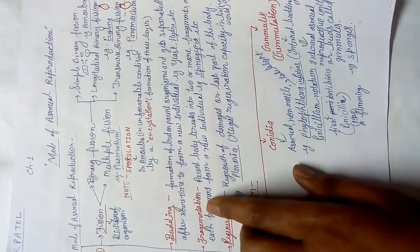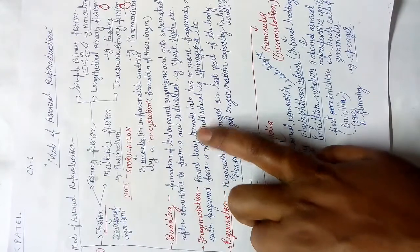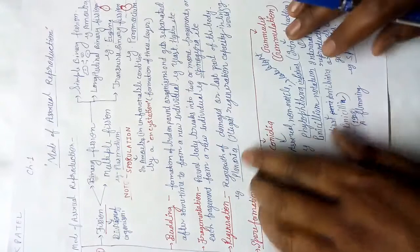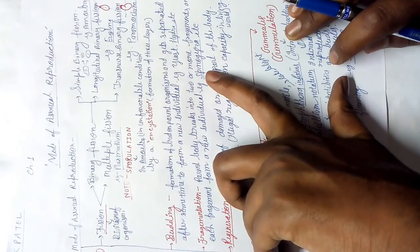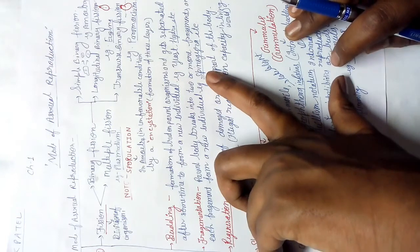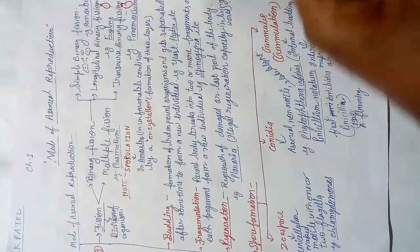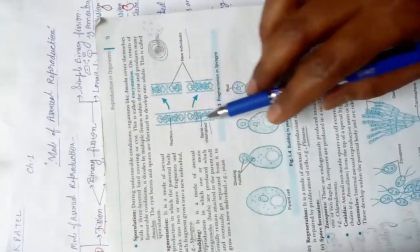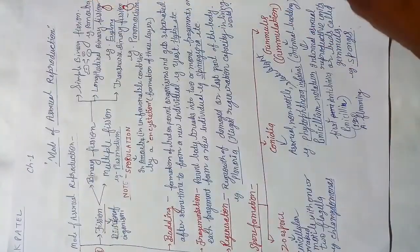Next is fragmentation. The parent body breaks — or splits — into two or more fragments, and each fragment forms a new individual. The example is Spirogyra, and also some fungi. Spirogyra has a spiral chloroplast. In the diagram you can see the main parent body divided into two parts, each forming a new individual.